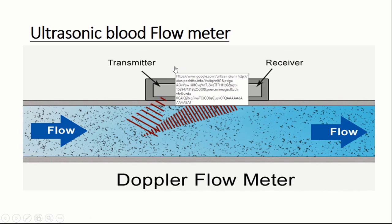Ultrasound blood flow meter: Ultrasound waves are used for studying blood flow by measuring the change in their frequency produced due to Doppler effect.